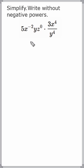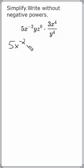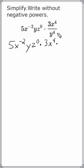We have to simplify this expression and write it without any negative powers. What we're going to do is rewrite this expression using all multiplications. So we write 5x to the negative second, multiplied by y, multiplied by z to the zero power, multiplied by the numerator 3x to the fourth. Notice that we're dividing this term, so we're going to take it and move it to the other side of our fraction bar.